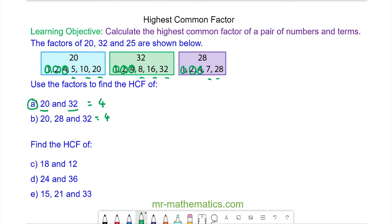So the highest common factor of 18 and 12, well we work out the factors of each number. So for 18 we have 1 and 18, 2 and 9, 3 and 6. For 12 we have 1 and 12, 2 and 6, 3 and 4.